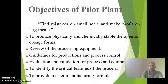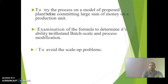Further objectives include: producing physically and chemically stable therapeutic dosage forms, reviewing processing equipment, providing guidelines for production and process control, evaluating and validating processes and equipment, identifying critical features of the process, providing a master manufacturing formula, trialing the process on a model plant before committing large sums of money, and examining formula ability to withstand batch scale and process modifications.